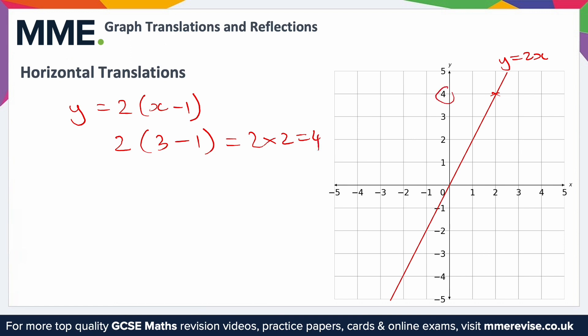To translate left, you can do the same thing except rather than subtracting here you would add. So if you want to translate to the left, you change this to a plus and that would move it one to the left instead.